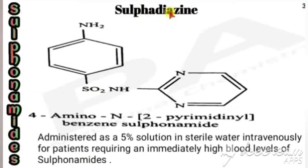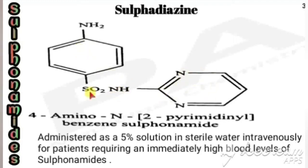The next drug is sulfadiazine. From the name itself, 'di' indicates two nitrogens are present. The basic sulfanilamido group has pyrimidine attached at its second position. Its chemical name is 4-amino-N-(pyrimidin-2-yl) benzene sulfonamide. It is administered as a 5% solution in sterile water intravenously for patients requiring immediately high blood levels of sulfonamides. The heterocyclic ring present in sulfadiazine is pyrimidine, with its second position attached to the sulfanilamido group.